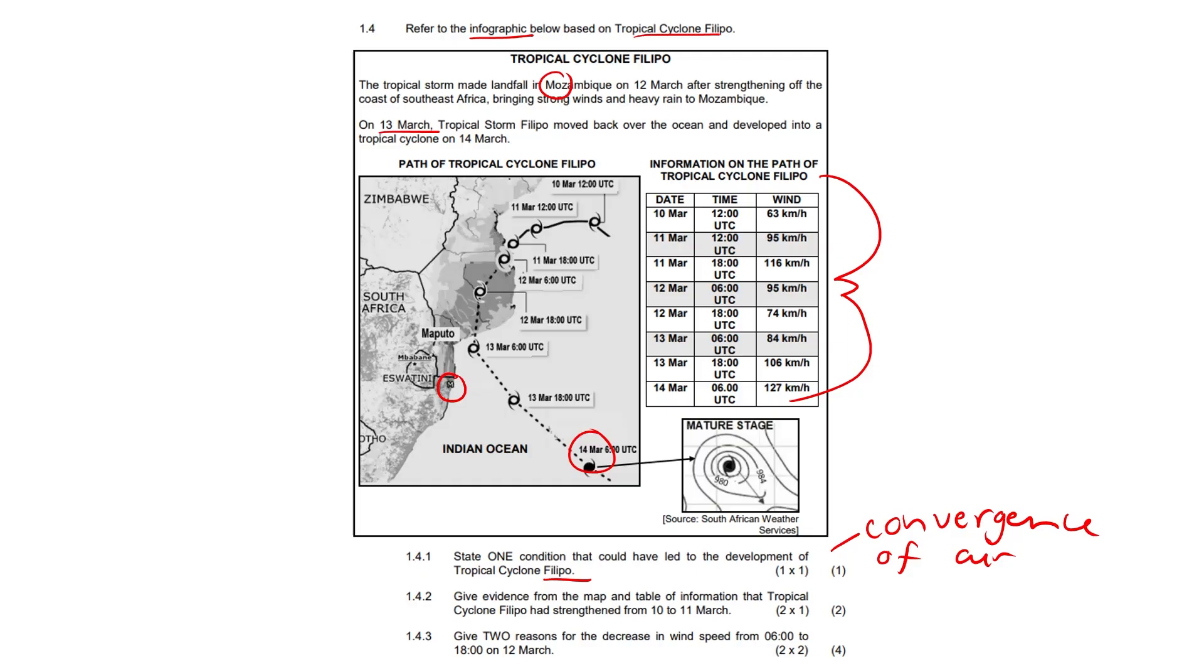1.4.2: Give evidence from the map and table of information that tropical cyclone Filippo had strengthened from the 10th to the 11th of March. So from the 10th to the 11th, looking here, it was exposed to more moisture over the ocean from the 10th to the 11th of March, so here to here.